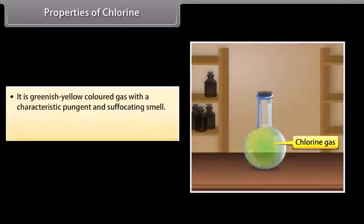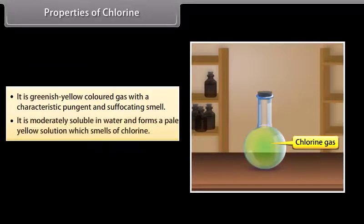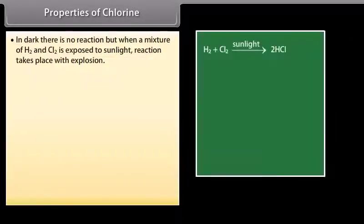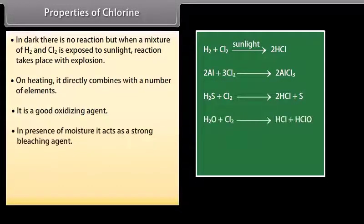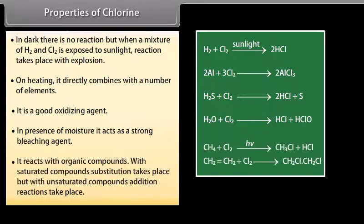Properties of chlorine: It is a greenish-yellow colored gas with a characteristic pungent and suffocating smell. It is moderately soluble in water, forming a pale yellow solution called chlorine water. In the dark there is no reaction, but when a mixture of H₂ and Cl₂ is exposed to sunlight, reaction takes place with explosion. On heating, it directly combines with a number of elements. It is a good oxidizing agent, and in the presence of moisture acts as a strong bleaching agent. With saturated compounds, substitution takes place; with unsaturated compounds, addition reactions occur.